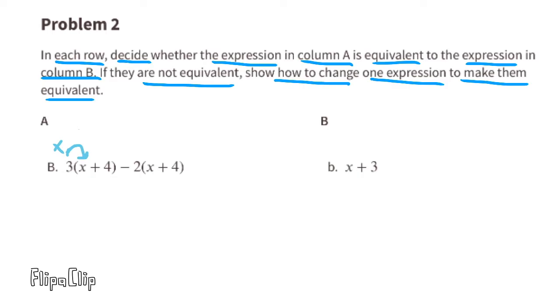B. 3 times x is 3x. 3 times a positive 4 is a positive 12, or plus 12. Negative 2 times x is negative 2x, and negative 2 times a positive 4 is a negative 8. 3x minus 2x is 1x, and positive 12 minus 8 is a positive 4, so this expression is equivalent to 1x plus 4.